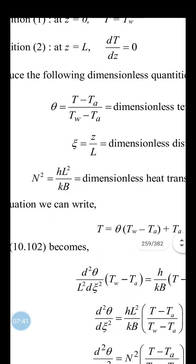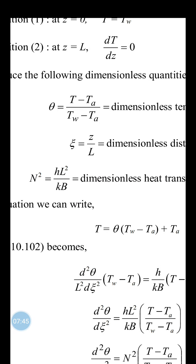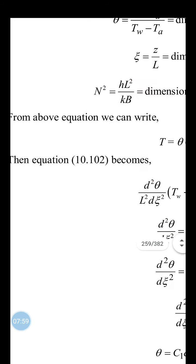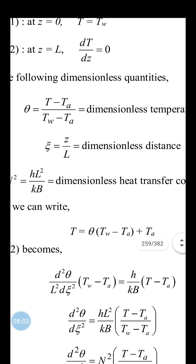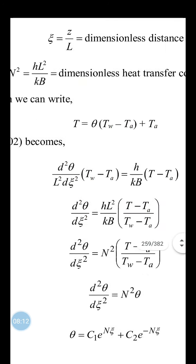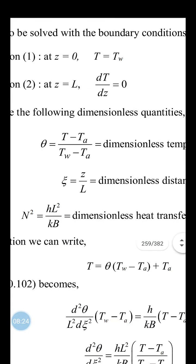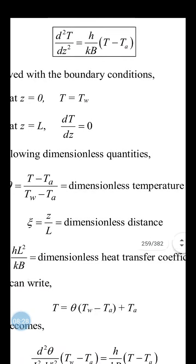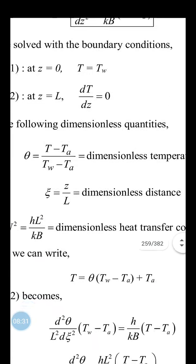The third dimensionless quantity is N², defined as N² = hL²/(kb), where h is the heat transfer coefficient, L is fin length, k is thermal conductivity, and b is half-thickness. Expressing T in terms of θ: T = θ(T_w − T_a) + T_a. Substituting into the ODE gives: d²θ/dζ² = N²θ.